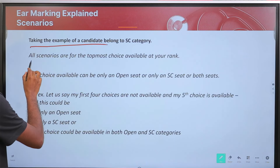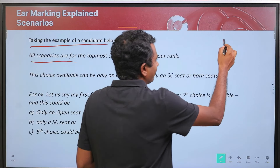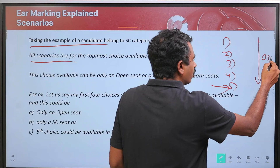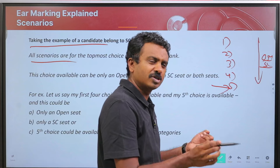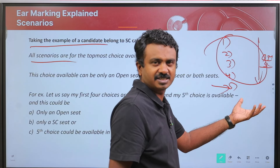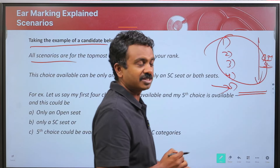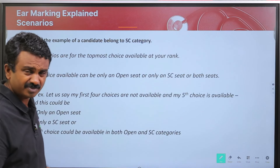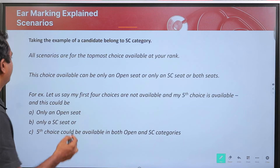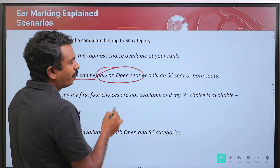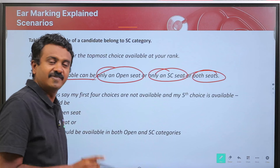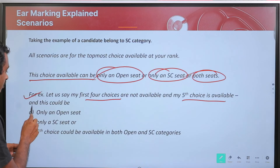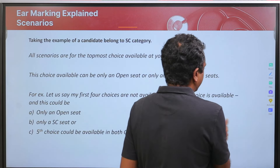Taking the example of the SC candidate: all scenarios are based on the topmost seat available. Let us say we are considering choices 1 through 5, and only the 5th seat is available — for example, MD Pediatrics at LTM. Choices 1 to 4 are not available under either open or SC category. At choice 5, there could be multiple scenarios: only an open seat available, only an SC seat available, or both open and SC seats available.